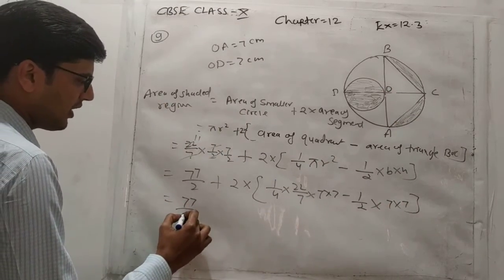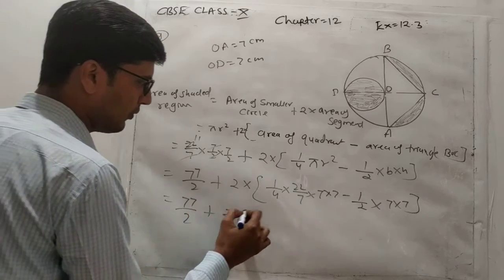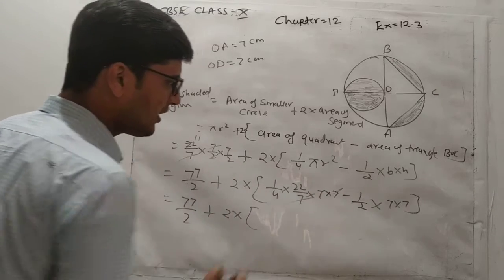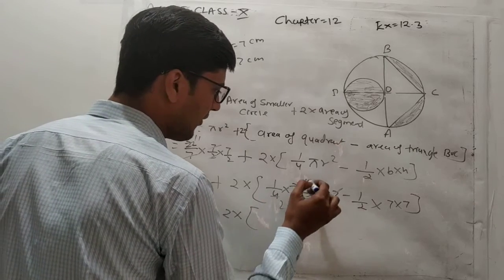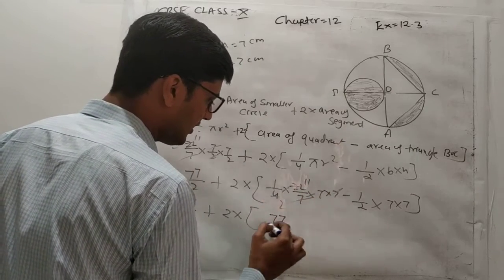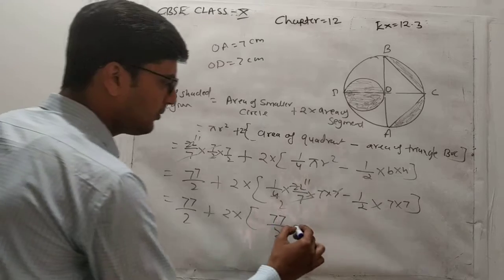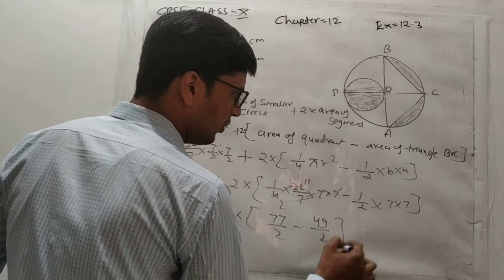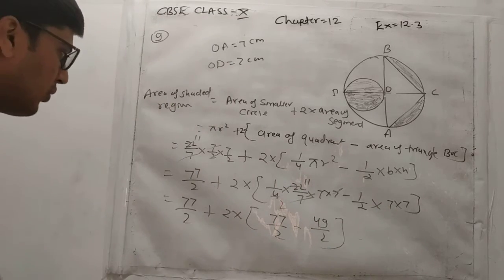So 77 upon 2, plus 2 into - it becomes 1, 7 se 7 cancel out, and 4, 2 se 11. So 11 se 77 upon 2, and it becomes 49 upon 2.